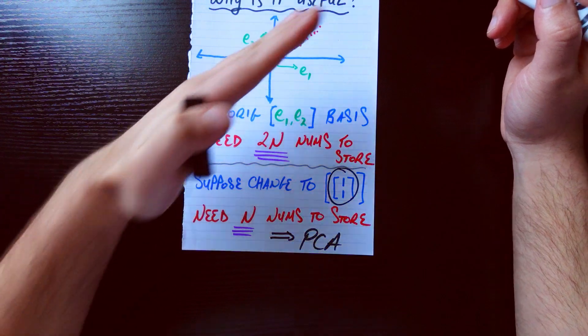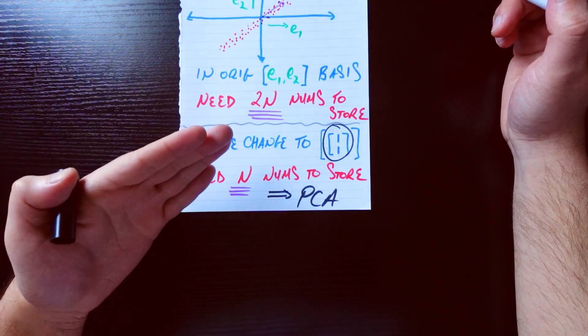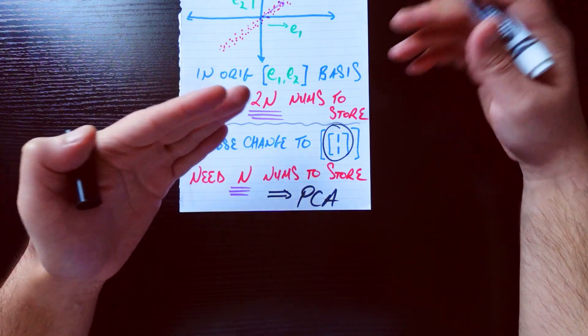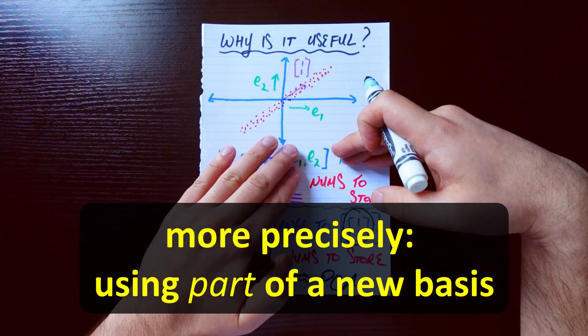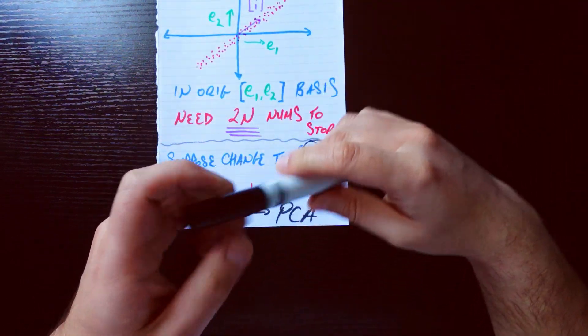For each data point, which PCA will tell you is the dominant direction here. And so we basically cut the amount of data storage we need in half by just using a new basis instead of the original e1, e2 basis to store our data. So tons of applications. PCA is one of them.